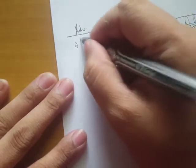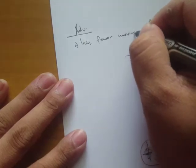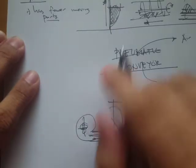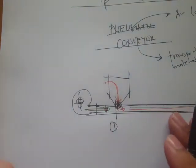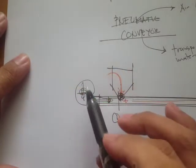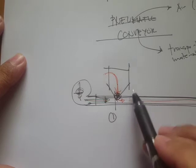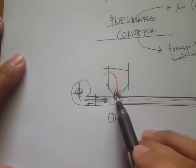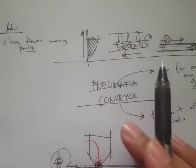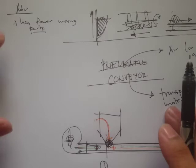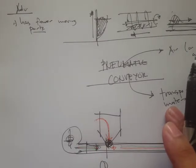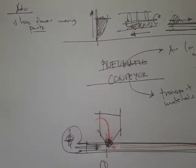For the advantages of pneumatic conveyor systems: first, the pneumatic conveyor has fewer moving parts. Only the blower and some of its components are moving. Compare that to bucket elevators, screw conveyors, and belt conveyors, which all include a lot of moving parts. Fewer moving parts means less cost on maintenance, repair, and troubleshooting.